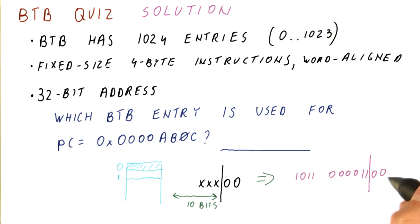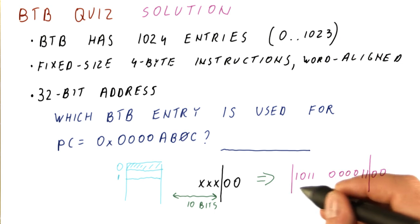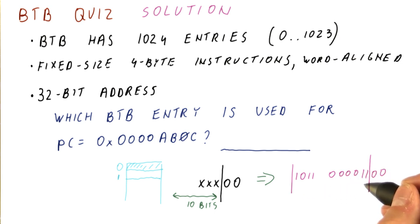We're going to ignore these two bits and take the next 1, 2, 3, 4, 5, 6, 7, 8, 9, 10 bits. So this is the index into our BTB.